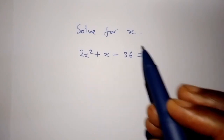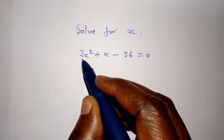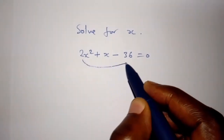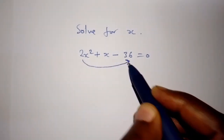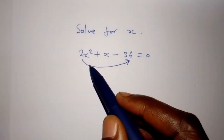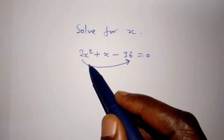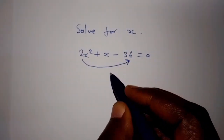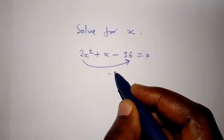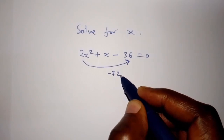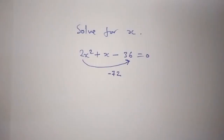We are going to multiply 2 by negative 36. When we multiply 2 by negative 36, we end up getting negative 72.